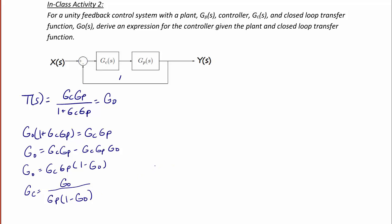Now let's suppose that we wanted to represent the plant transfer function in terms of its numerator and denominator. So Gp would be equal to the numerator of the plant over the denominator of the plant. And we wanted to represent G0, the closed-loop transfer function, as the numerator N0 over the denominator D0. Let's rewrite the expression for Gc in terms of the numerator and denominator for the plant and the closed-loop transfer function.